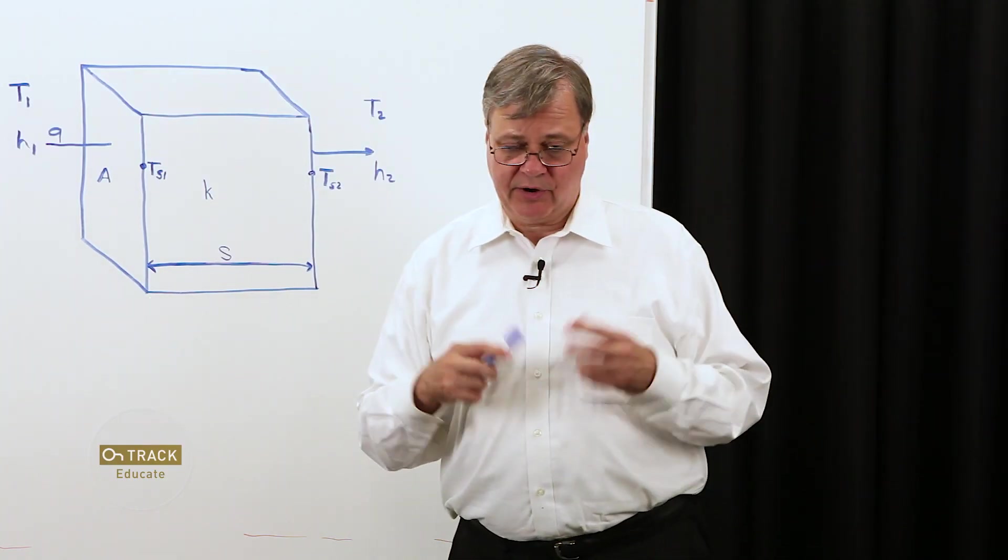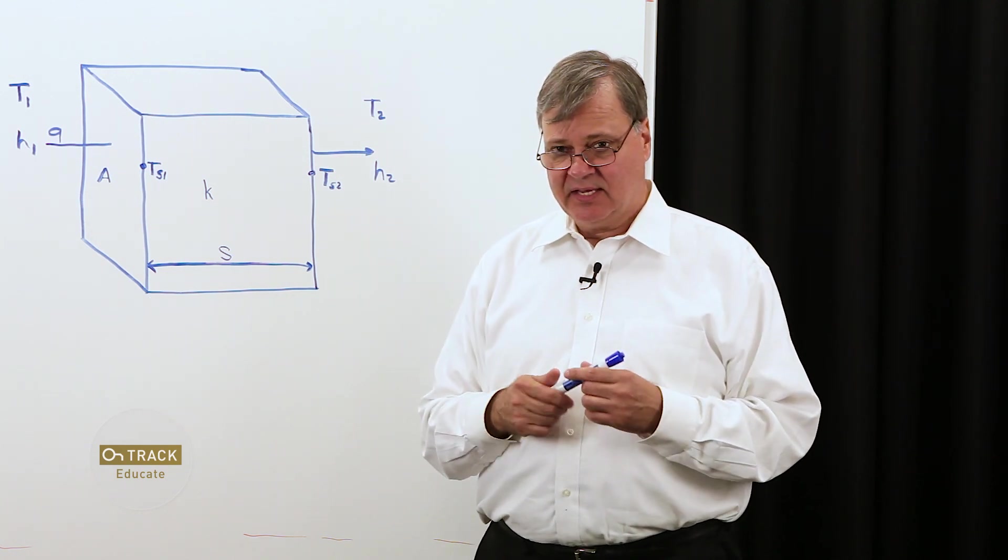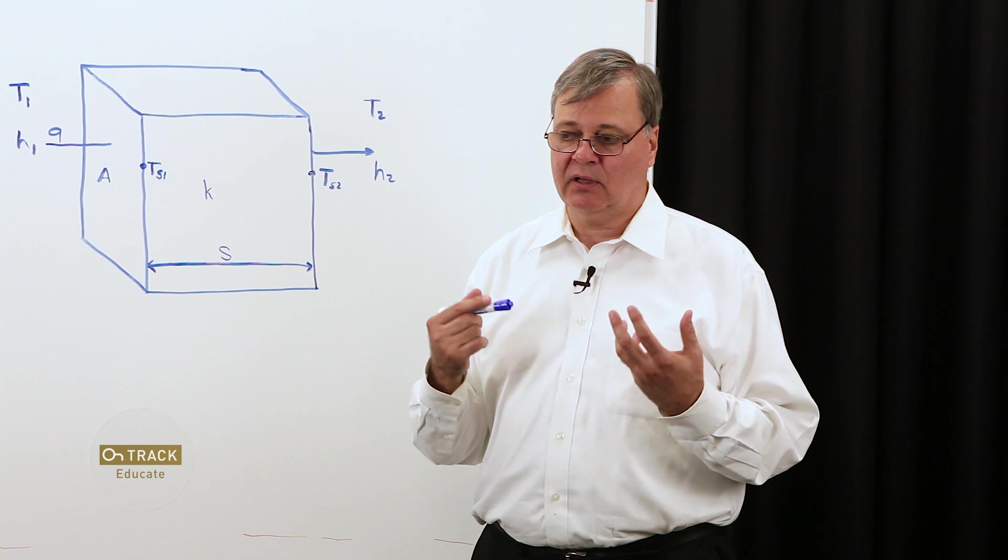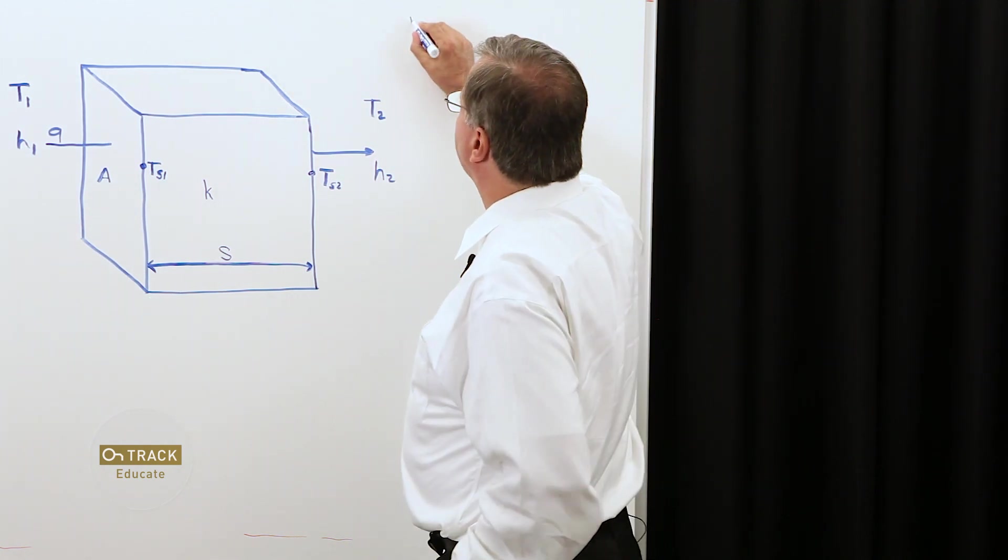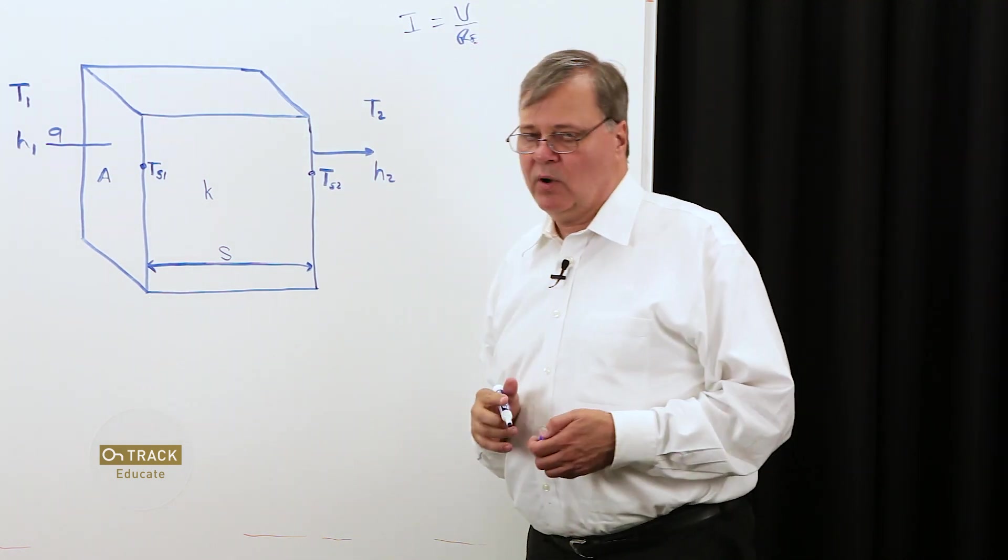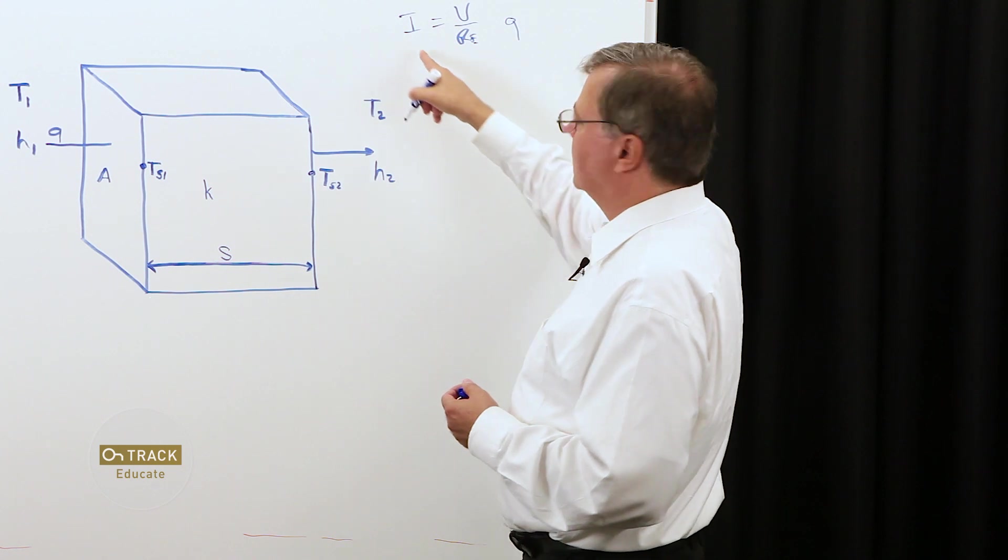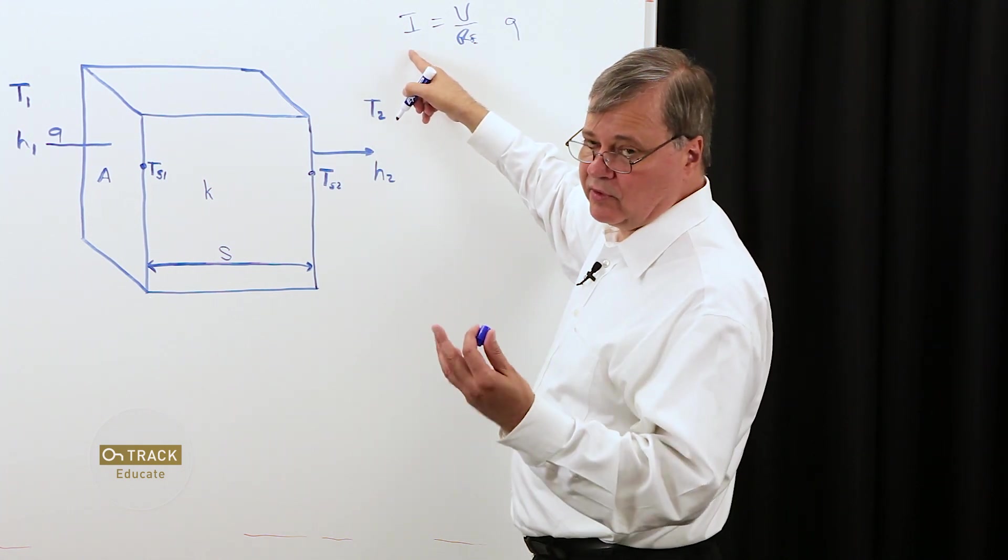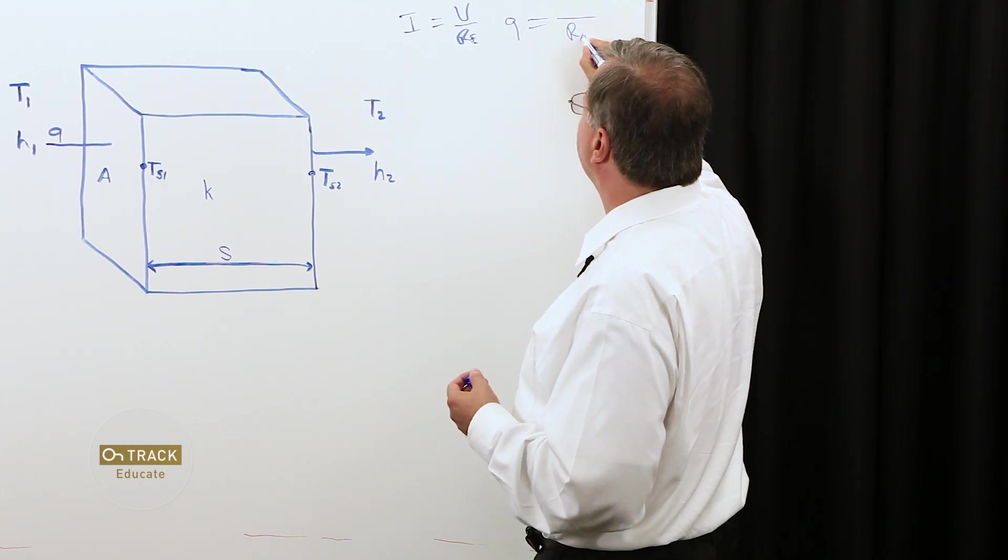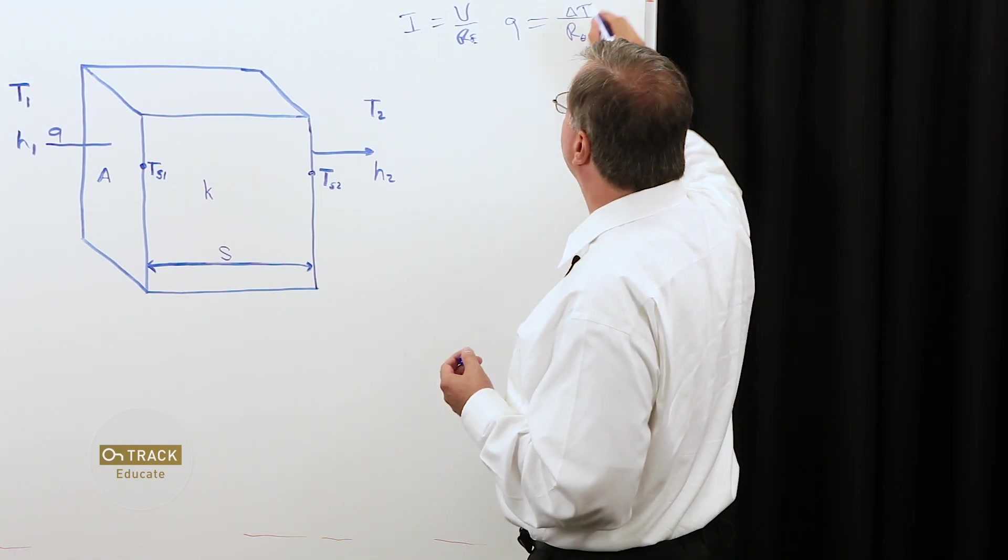Now, we're all familiar with Ohm's law, I equals V over R. What that represents is a forcing function, voltage, forcing current to go through an electrical resistance. I equals V over R electrical. Well, we have an equivalent concept in heat transfer, where the heat transfer rate, Q, not unlike the charge transfer rate I, through a thermal resistance R theta, is being driven by a temperature differential.